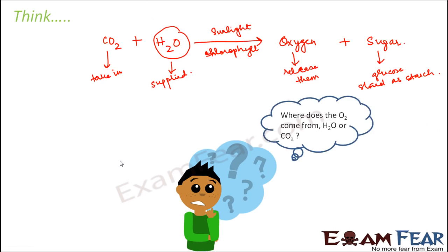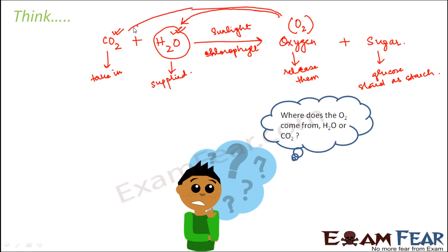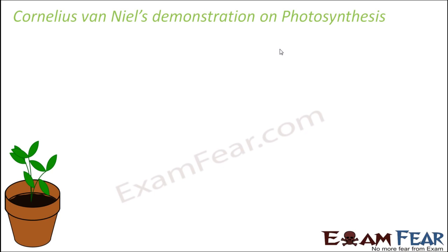So this is how the entire process takes place. Now the question is, where does the oxygen come from? There are two possibilities — carbon dioxide also has oxygen, and water also has oxygen. So the question is whether the oxygen comes from the water or from the carbon dioxide. In order to clear this doubt, another set of experiments was performed. A scientist named Cornelius Van Niel performed this experiment to prove that the oxygen comes from water and not from carbon dioxide.